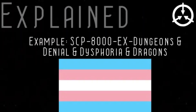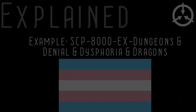Explained SCPs are SCPs that were thought to be anomalies, but after further research were found to be completely normal and fully understood, to the point where their effects are now seen as non-anomalous by mainstream science.